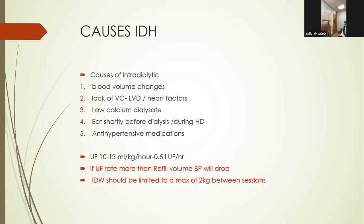If the ultrafiltration rate is more than the refill volume, blood pressure will drop. The advice is that intradialytic weight gain — the weight a patient puts on between two sessions — should be a maximum of two kilograms between sessions. This equates to roughly 10 to 13 mL per kg per hour; we always instruct nurses to aim for about half a litre per hour. Sometimes they could remove more, but ideally only half a litre per hour.